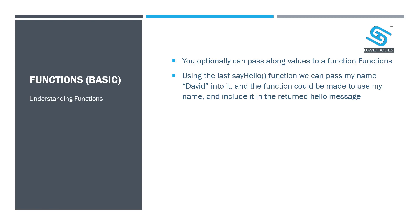If you were already thinking of that, congratulations — you already think like a programmer and picking this up is going to be super easy for you. If you didn't make that connection, no big deal — a lot of that comes with learning for the first time. So, using the 'say hello' function as an example: if my name is David and I pass the name David into the function, it could be made to use my name and return it as part of whatever it does — in this case, say hello.